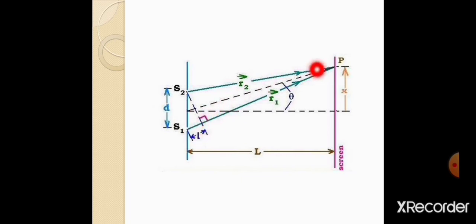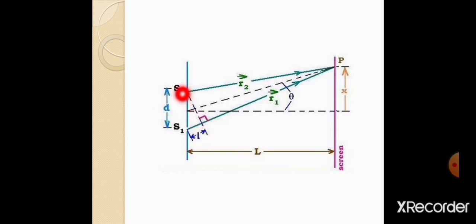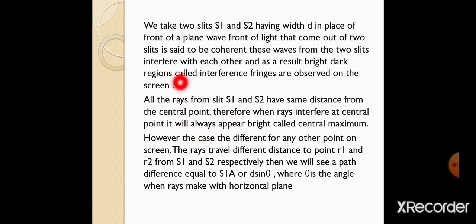P point consider kar lete hain. S1 se P point tak ka jo distance hai that is r1, aur S2 se P point tak ka jo distance hai that is r2. S2 se P tak ka distance kam hai as compared to S1 se P tak. To path difference equalize karne ke liye yahaan pe ek perpendicular fall kerwaya hai. Perpendicular fall kerwane ke baad S2 aur us point aur P point tak ek triangle form hui hai, jismein path difference equal ho jayega, aur S1 aur S2 ka jo central distance hai that is d. We take two slits S1 and S2 having width d in front of a plane wavefront of light. The waves that come out of the two slits are coherent. These waves interfere with each other and as a result bright and dark regions called interference fringes are observed on the screen.